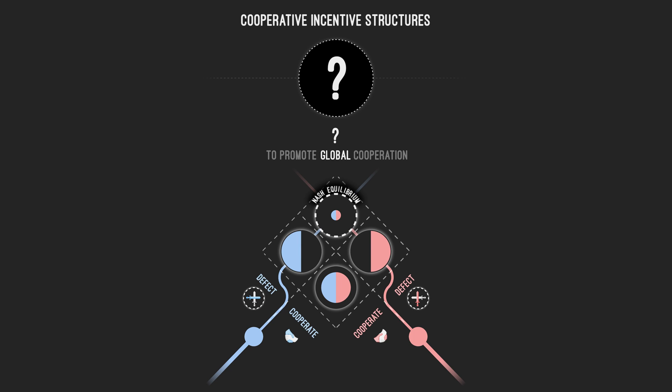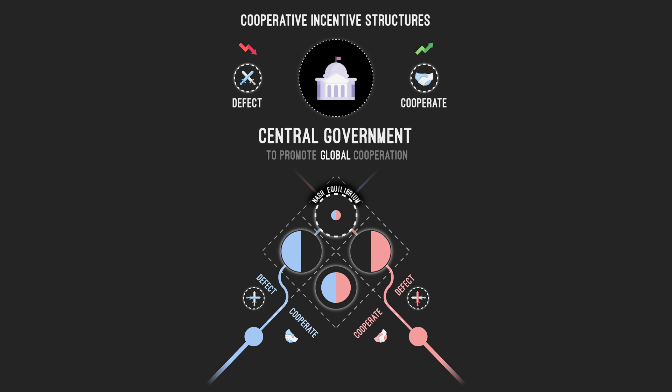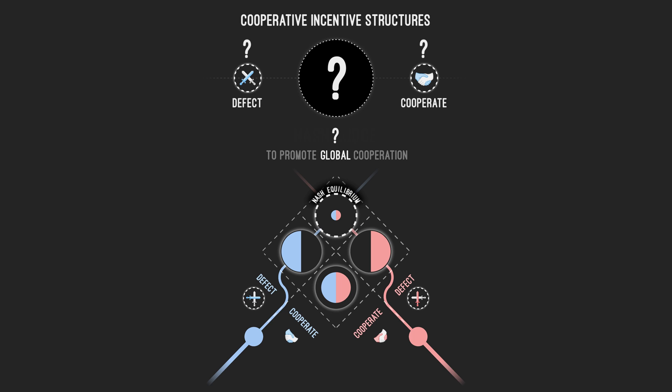Promoting global cooperation is one of the most important problems we need to address if we want our societies to thrive. Some intellectuals in the past have advocated for a top-down solution: a one-world government that can impose sanctions and rewards to subordinate governments according to their behavior. In the status quo, this is highly unlikely to occur, because it requires either one power to dominate planet Earth, or all governments agreeing to be ruled by a superior government. In this video, I will be proposing an alternative solution. I've called it the Nash Judge.